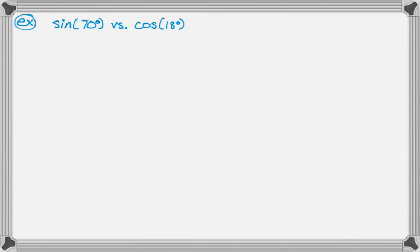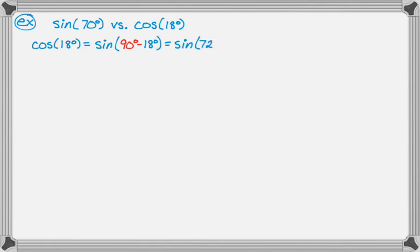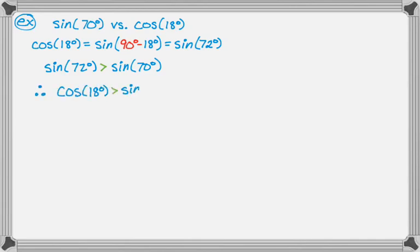Example one: compare sine of 70 to cosine of 18. I don't like working with cosine, so I'll change cosine into sine using the cofunction identity. Cosine of 18 degrees equals sine of 90 minus 18, which is sine of 72 degrees. Since both are first-quadrant angles, sine of 72 is bigger than sine of 70. Therefore, cosine of 18 is greater than sine of 70.